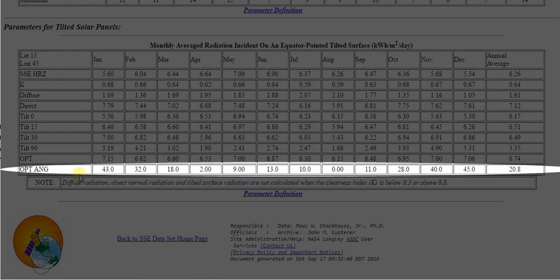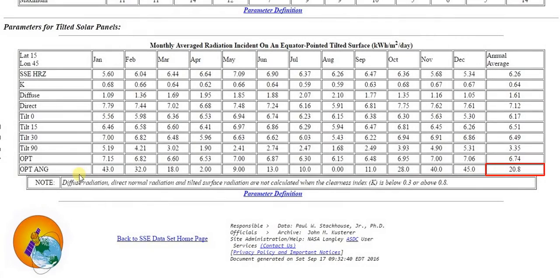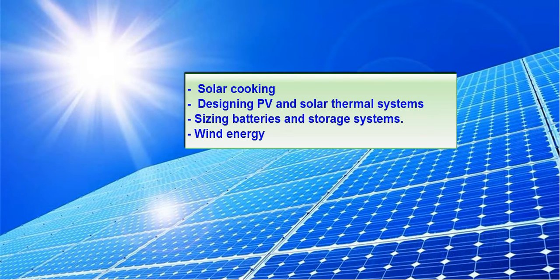The annual average shows the annual optimal tilt angle, which in this case is 20.8 degrees. You can also choose many other parameters useful for solar cooking, designing PV systems, solar thermal and wind applications, and sizing of batteries and storage systems.